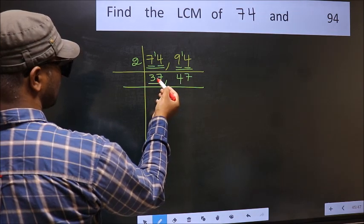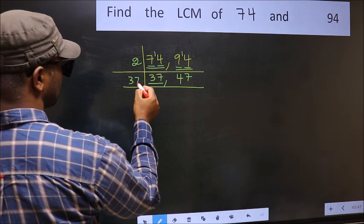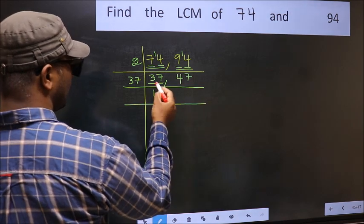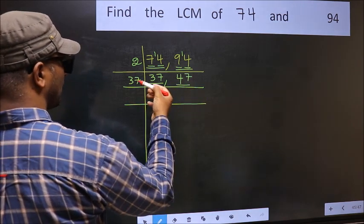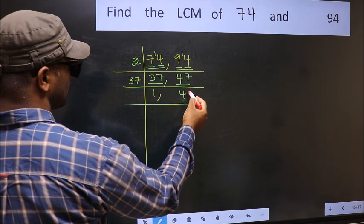Now here we have 37. 37 is a prime number, so 37 divides once to give 1. The other number 47 is not divisible by 37, so write it down as it is.